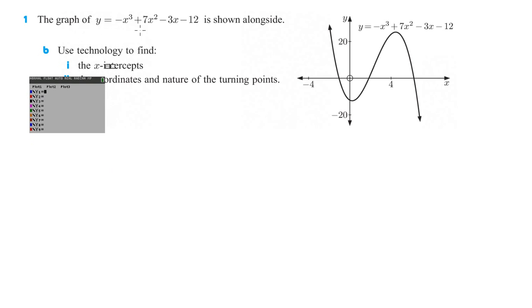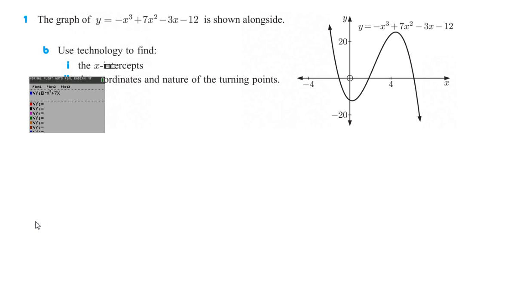It's already got the y equals right there. So we're just going to do negative — different than subtract. It starts off with a negative sign here. And then we've got x to the third, plus 7x squared, minus 3x, minus 12.